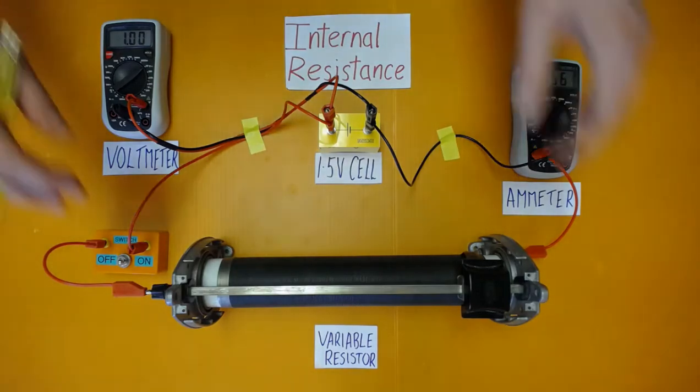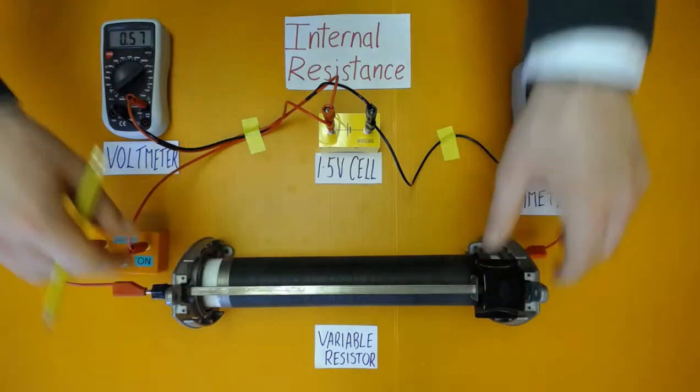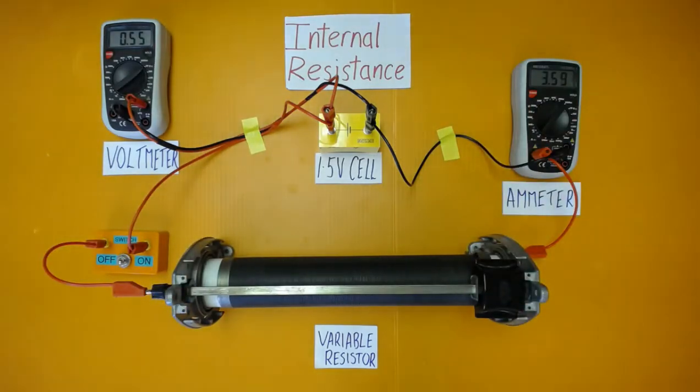Decreasing again to the minimum resistance, we have a current of 3.55 amps and a terminal potential difference of 0.54 volts.